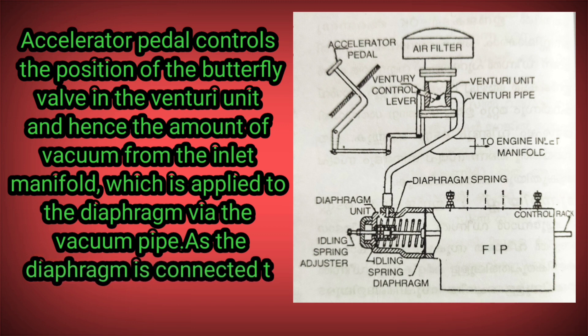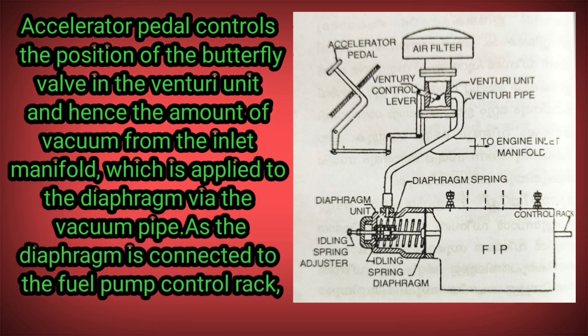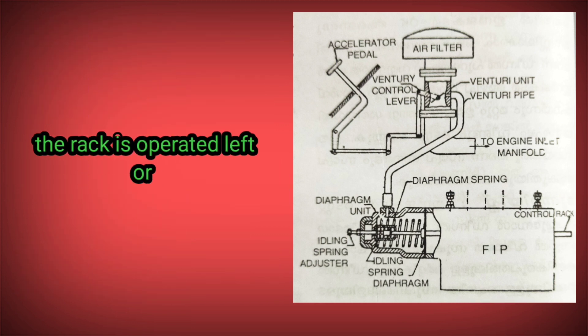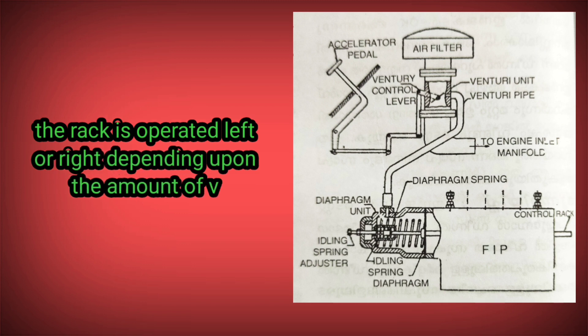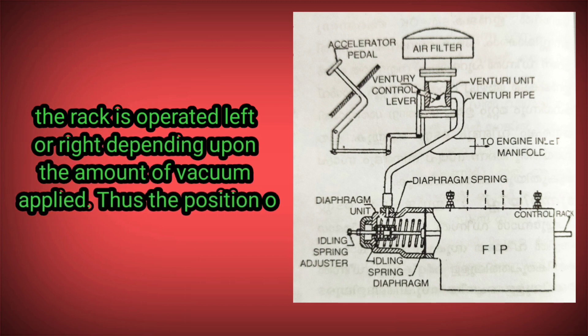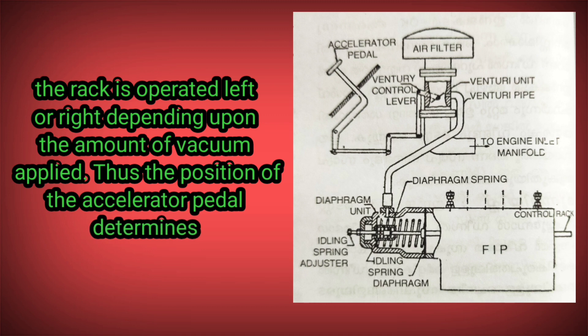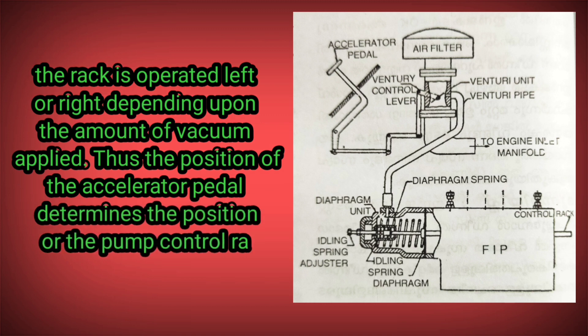As the diaphragm is connected to the fuel pump control rack, the rack is operated left or right depending upon the amount of vacuum applied. Thus, the position of the accelerator pedal determines the position of the pump control rack.